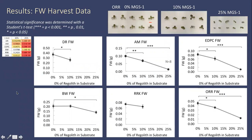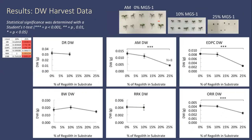At harvest, there was not enough vegetative tissue in order to collect data for the 50% concentration of regolith. However, for the fresh weight, for the 25% concentration of regolith relative to the control group, each of the six cultivars was statistically significant in fresh weight. For dry weight, five of the six cultivars were statistically significant between the 25% concentration of regolith and the control group.